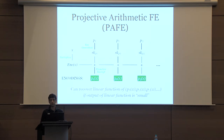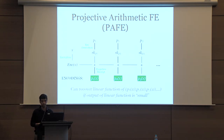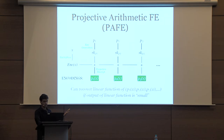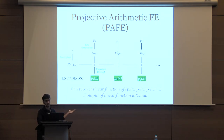The recover algorithm outputs a linear function of all these elements in the clear, as long as the output is small. The notion is similar to an FE scheme, except that in FE the output of decryption gives you the result in the clear, whereas here it's an encoding. Later on, you can manipulate these encodings to recover a result in the clear.